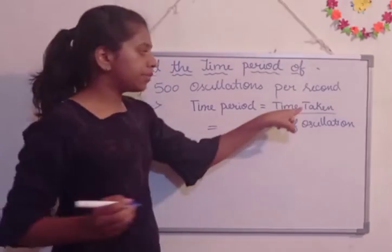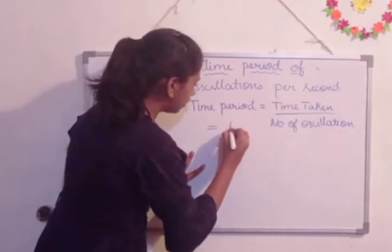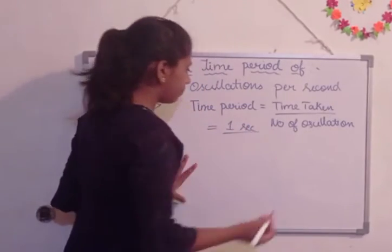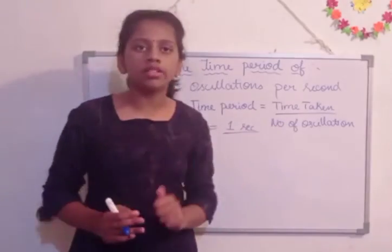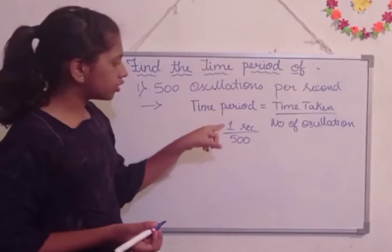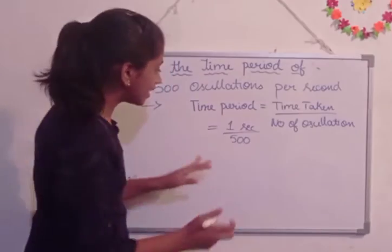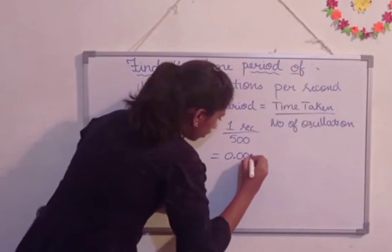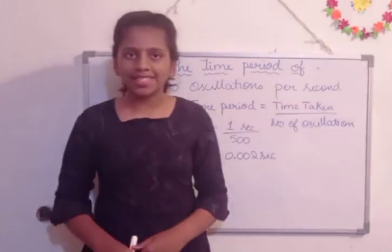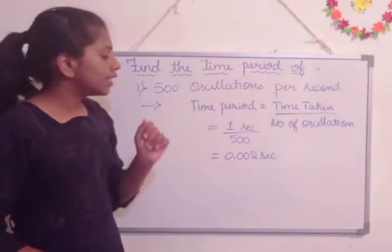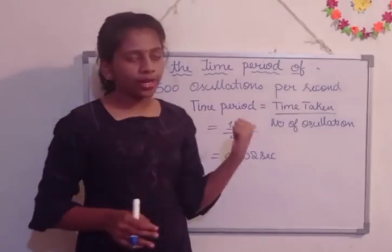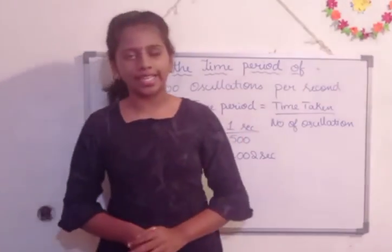So the time taken is one second, and the number of oscillations completed is 500. We divide 1 by 500, and how much do we get? That is 0.002 seconds. So this is the time period of 500 oscillations per second. To complete one oscillation, 0.002 seconds is the time required. We divide 1 by 500 and get 0.002 seconds as the time period.